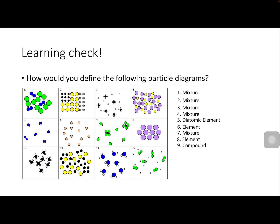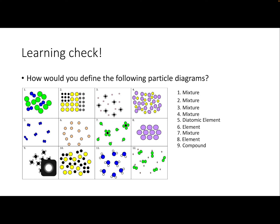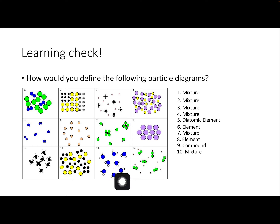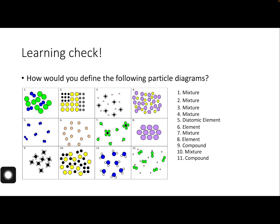Number nine is a compound because all the structures are the same — each black dot has four white dots, and there's nothing else except black dots with four white dots attached. Number ten has two different colors and nothing is attached, so it's a mixture. Number eleven has blue dots each with two white dots, all structures the same with nothing else, so number eleven is a compound. Number twelve has two green dots attached and a bunch of unattached white dots — two different colors, not attached — so this is also a mixture.